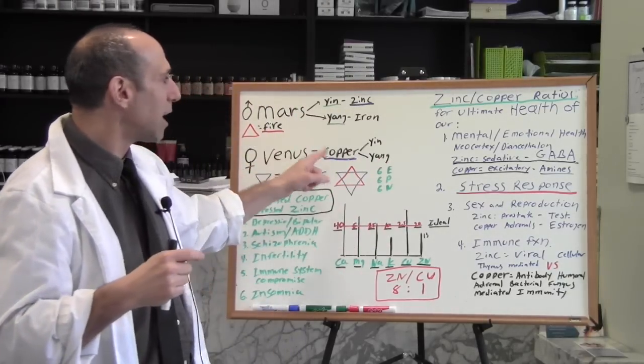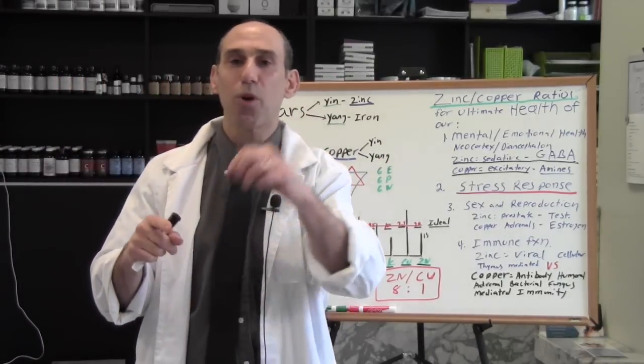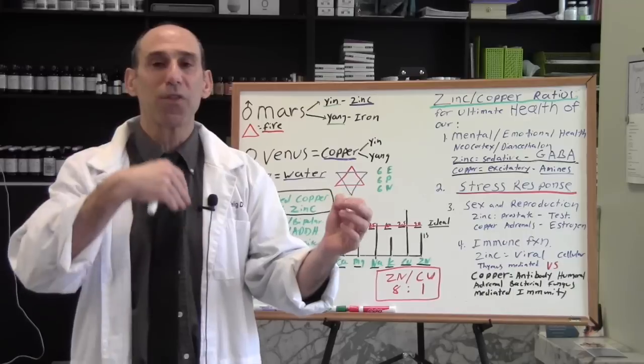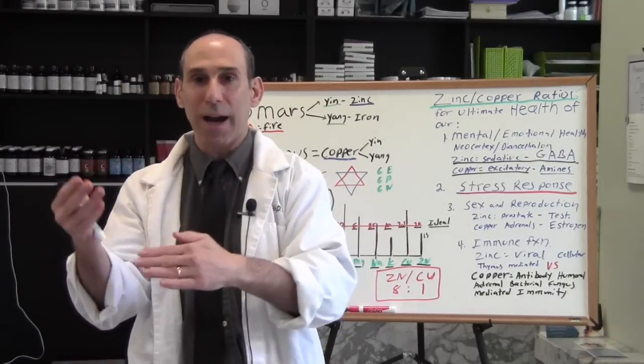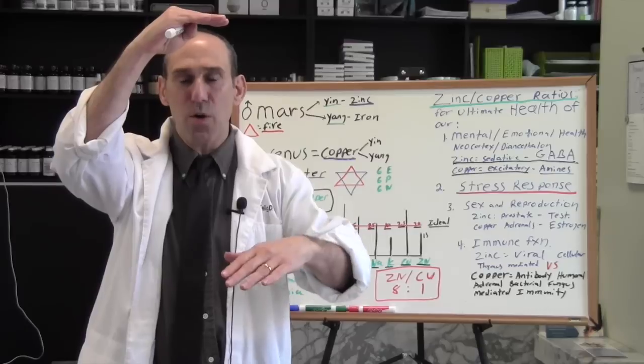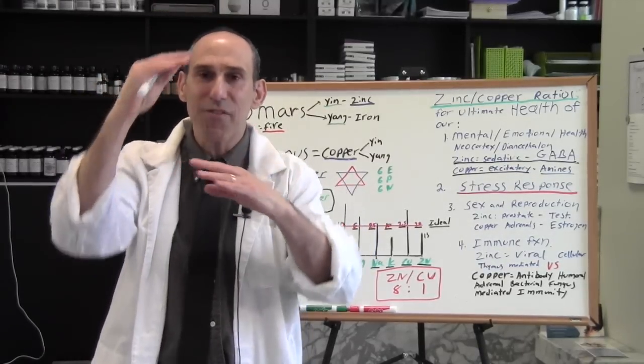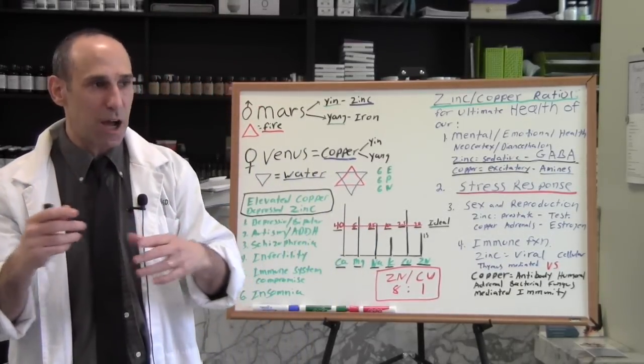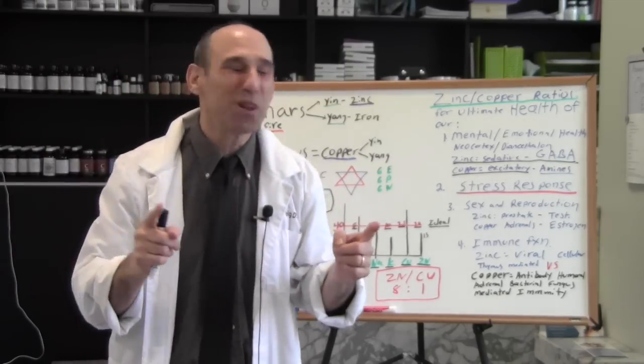And we know that copper is associated with more of the diencephalon, more of the animalistic brain, the lower centers. So we have the higher neocortex and the diencephalon, which gives us more of a complete brain.